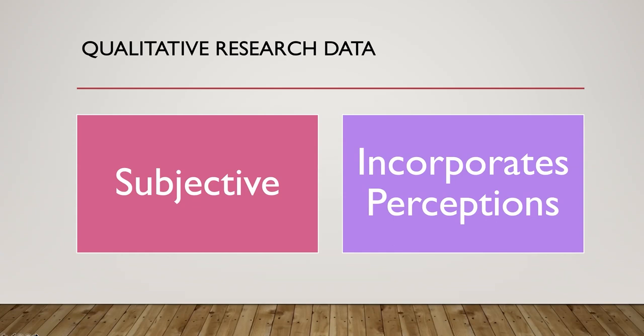Qualitative data is typically going to be subjective. You observe individuals and then somehow record that — whether on a tape recording device, taking pictures, or writing narratives down. The data is generally going to be non-numerical in nature. You're collecting this data through different means: observations, one-to-one interviews, focus groups, or what have you. One of the things to know is that you're going to incorporate your own perceptions of that data. The researcher is part of the qualitative research process, and you're incorporating your perceptions into the data.